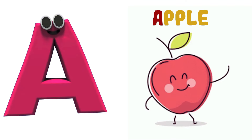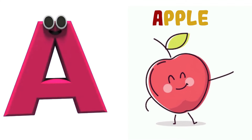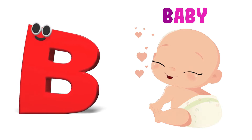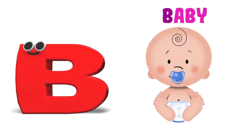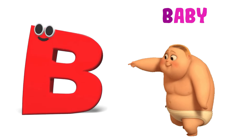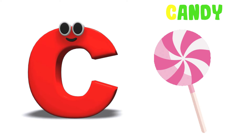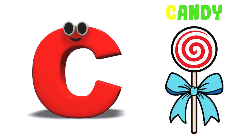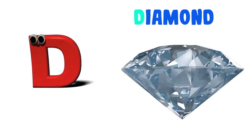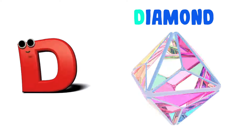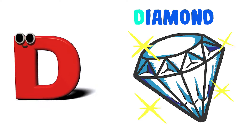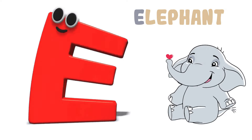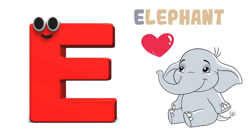A is for Apple, A-A-Apple, A-Apple. B is for Baby, B-B-Baby, B-Baby. C is for Candy, C-C-Candy, C-Candy. D is for Diamond, D-D-Diamond, D-Diamond. E is for Elephant, E-E-Elephant, E-Elephant.